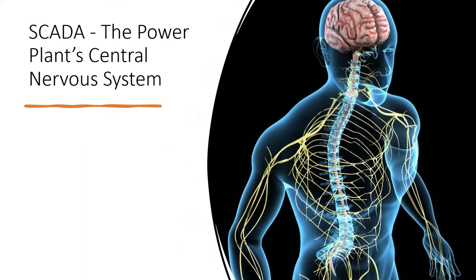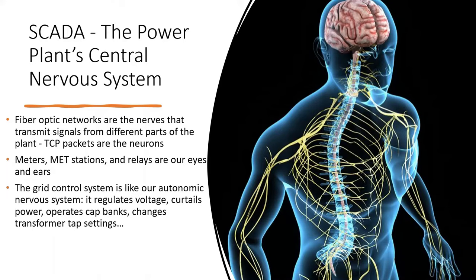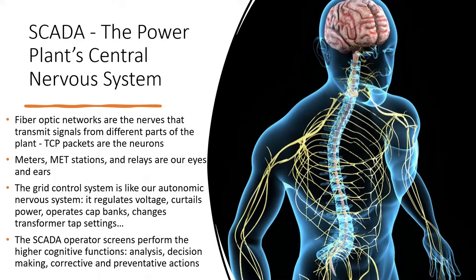When we talk about SCADA, we can associate its functionality to the human nervous system, wherein it is a network of neurons whose main feature is to generate, modulate, and transmit information between all the different parts of the human body. You have your fiber optic and ethernet networks that act like nerves. Your sensors and value generators like meters and weather stations act as eyes, ears, or skin. And your grid controllers serve as the autonomic side of the nervous system. Then your operators or end users of the data set would be your brain and can respond accordingly.